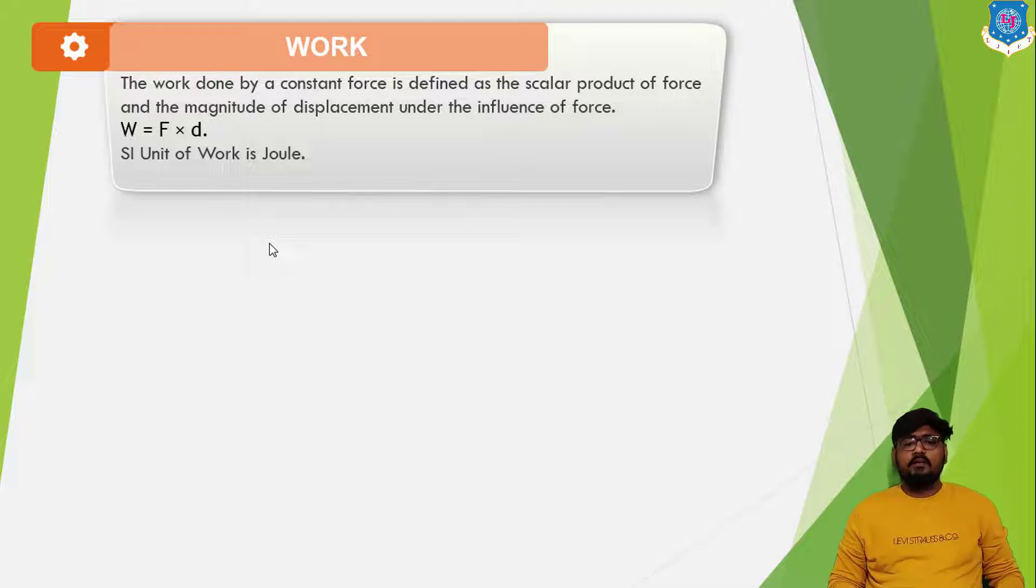Work is said to be done when a body or an object moves under the application of external force. When you apply some force, the object is moved. So suppose we kick a football, we are exerting an external force F and due to this force or the kick, the ball moves to a certain distance known as a displacement. So the work is said to be done and calculated as force multiplied by the displacement.